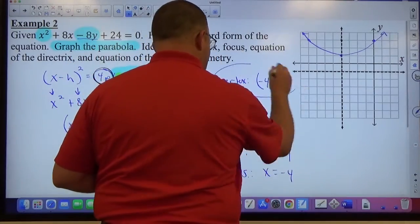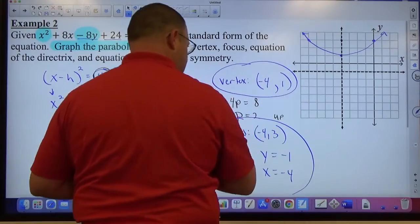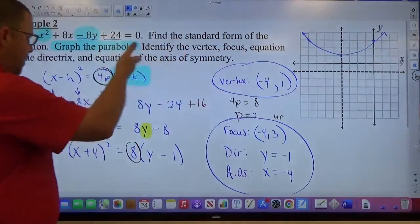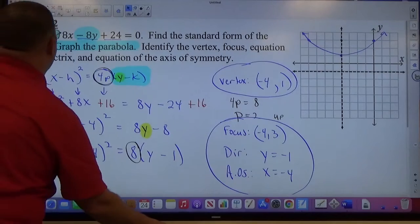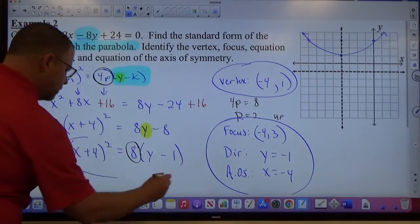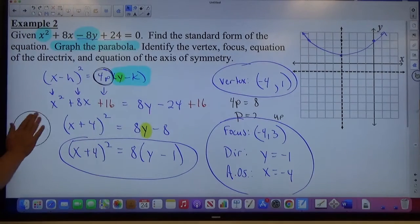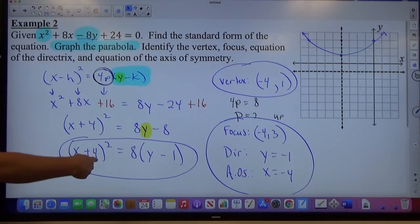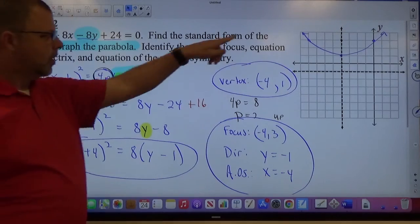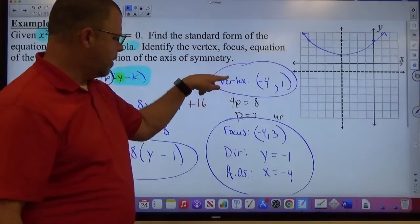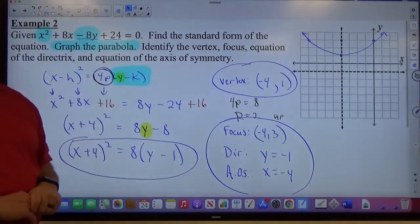The axis of symmetry goes through the focus and the vertex, x equals the number they have in their coordinates. So x equals negative 4. There's my vertex, there's my focus, directrix, axis of symmetry. My graph. My standard form. But it also said find the standard form. There you go. I'm going to take that circle out of there. So find the standard form done. Graph the parabola done. Identify vertex, focus, directrix, axis of symmetry done.